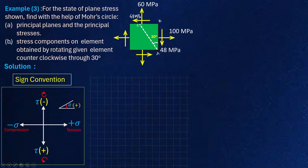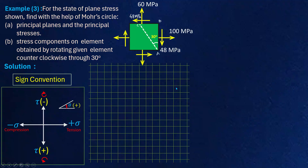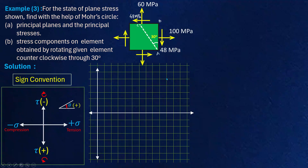So with this sign convention we are going to construct the Mohr circle and answer questions A and B. To construct the Mohr circle, I am going to draw a horizontal axis — this is called the normal stress axis — and the vertical axis is called the shear stress axis. We are going to look at plane AB on this graph. The normal stress is called sigma_xx and the shear stress is called tau_xy.